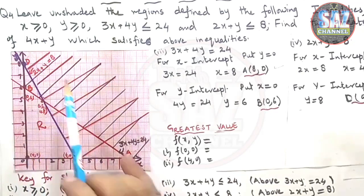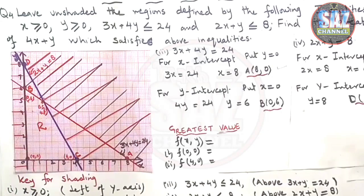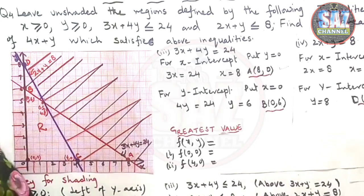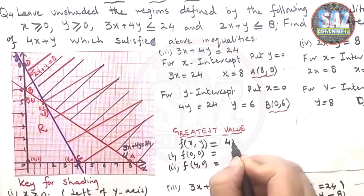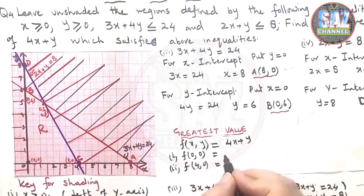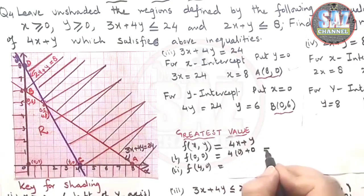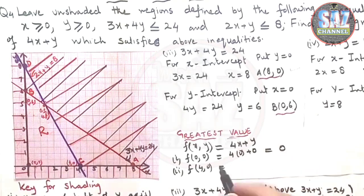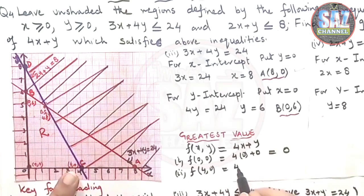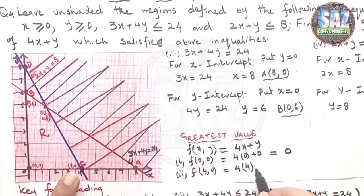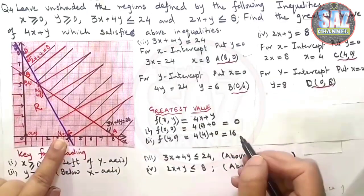Now what we have to do in order to find the greatest value of 4x + y, we have to put these vertices one by one in the function that need to be maximized or minimized that is 4x + y. When I am replacing x value and y value by 0, my answer comes 0. The second vertex is (4, 0). So I will be putting x by 4 and y by 0. This is 16 plus 0. This will be 16.